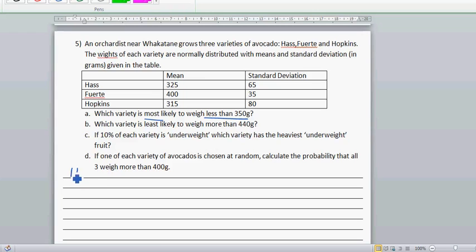Let's work out first for Hass. For Hass you want to find the probability first and then make an answer. The mean weight of avocados is 325 and the standard deviation is 65 grams. You want to find the probability that it weighs less than 350.